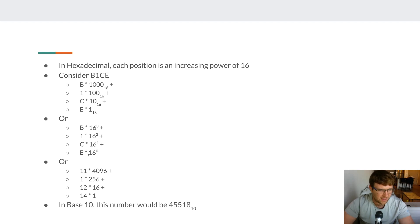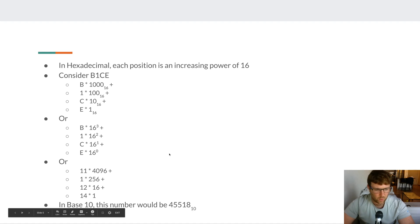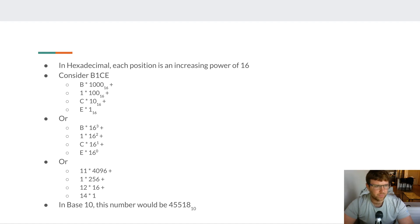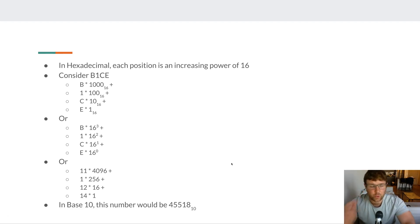Since we can't leave letters like B, C, and E in a decimal calculation, we substitute their values and do the math: 11 × 4096 + 1 × 256 + 12 × 16 + 14 × 1 = 45,518 in base 10. Similar to octal, there's no easy shortcut or pattern to match a hex number to its decimal equivalent — it really is just doing the math every time.